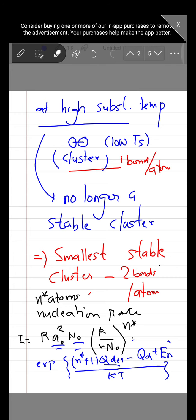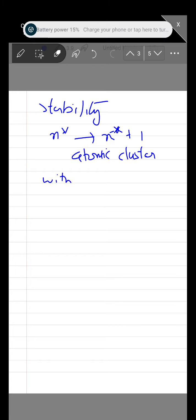So the stability, there is a transition. By stability, we mean there is a transition from N* to N* plus one atom cluster. Atomic clusters, that means we can add one more atom to an existing cluster. This is the stability and this can happen with increasing substrate temperature.